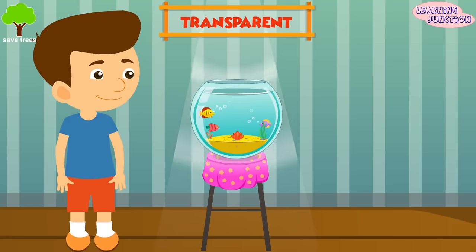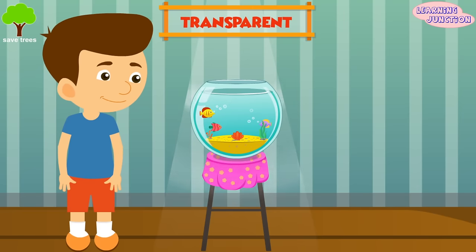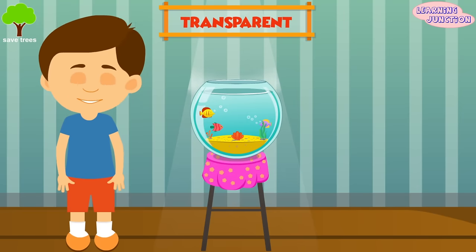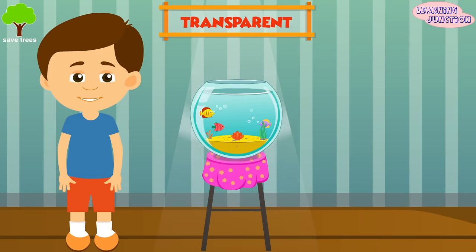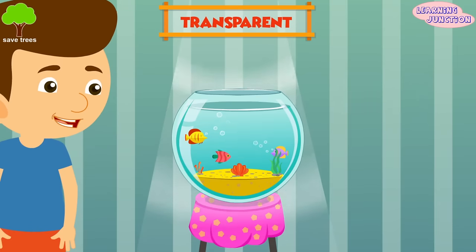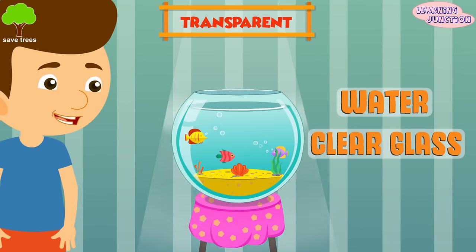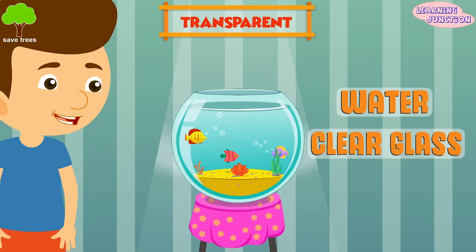Transparent Objects: You're able to see the fish clearly through the glass aquarium, as it's allowing light to pass through it, so it's transparent. Water and clear glass are examples of transparent objects.